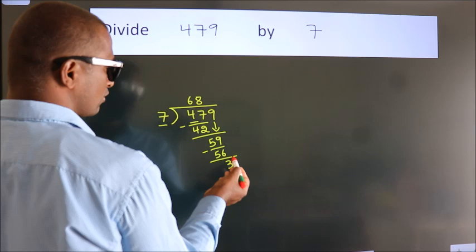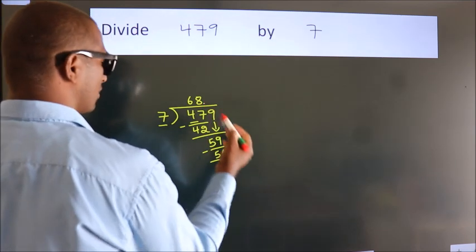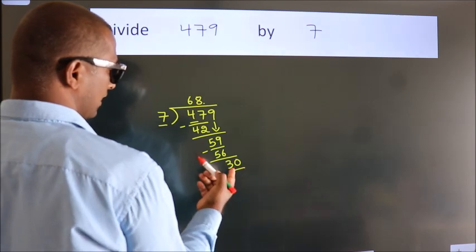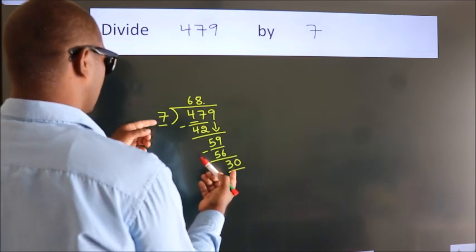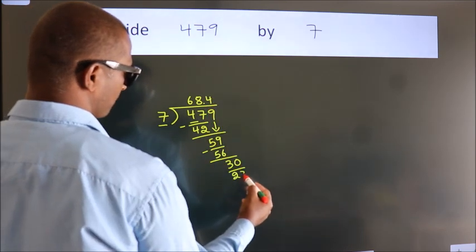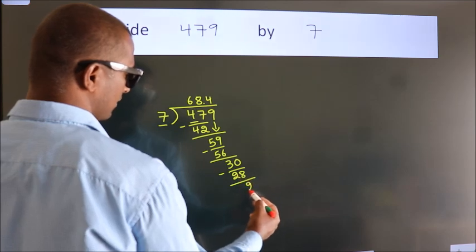After this, no more numbers to bring down. So what we do is put a dot and take 0. So 30. A number close to 30 in the 7 table is 7 times 4, which is 28. Now we subtract. We get 2.